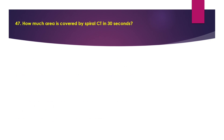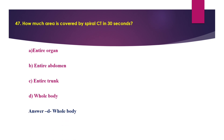Question 47: How much area is covered by spiral CT in 30 seconds? Option A: entire organ. Option B: entire abdomen. Option C: entire trunk. Option D: whole body. The answer is option D, whole body. Helical or spiral CT is the most advanced modality of conventional CT scan. The patient lies on the exam table that passes through the donut-shaped scanner while the X-ray tube rotates around the table, resulting in a spiral-shaped continuous dataset without any gaps.